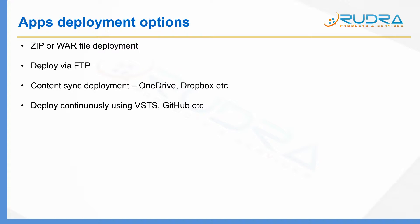The final option is deploying continuously using VSTS or GitHub. If you are working as part of a team in a large company, this is the most common way you will use to deploy content into Azure App Service. These are all the general deployment options available.